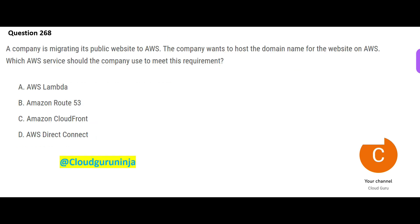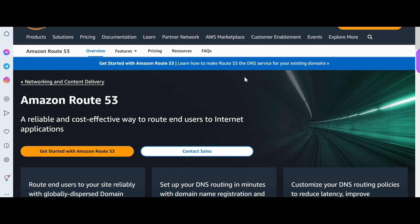The next question: a company plans to move to AWS from on-premises and they have a website. You want to know which service will help you host the domain name for the website. There is only one service — that is Option B, Route 53. This will help you with a cost-effective way to route end users to internet applications.